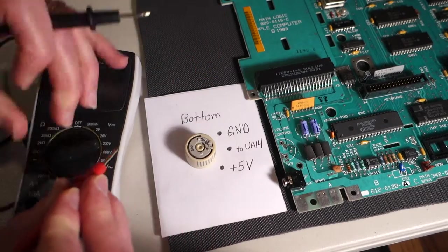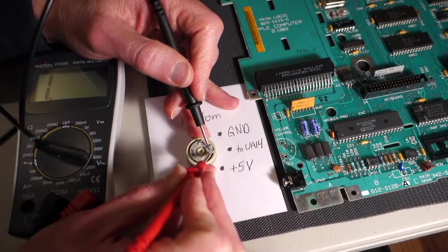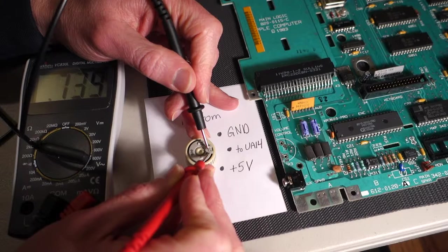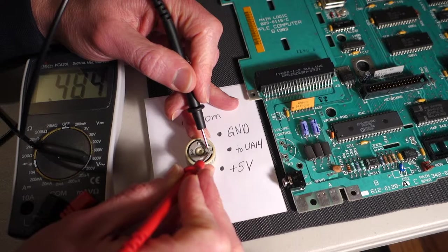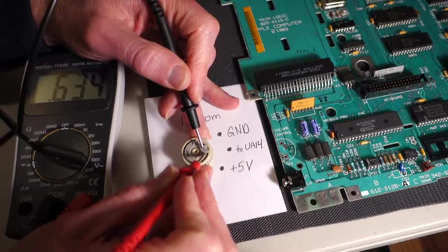And then if we change to just measuring the resistance between the middle pin and the plus five volts we get about 480 ohms. So that's close enough to 500.